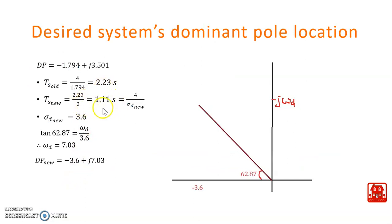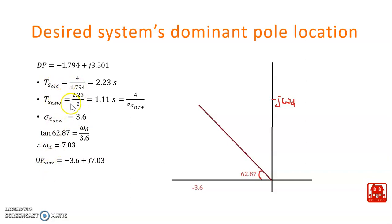This gives us the new settling time. Using this formula, we can determine the new sigma_d. Based on theta_d calculated from the damping ratio, we can determine the new omega_d. So based on this new omega_d and new sigma_d, we can determine the new dominant pole of the system satisfying the 2-fold reduction in settling time design requirement.